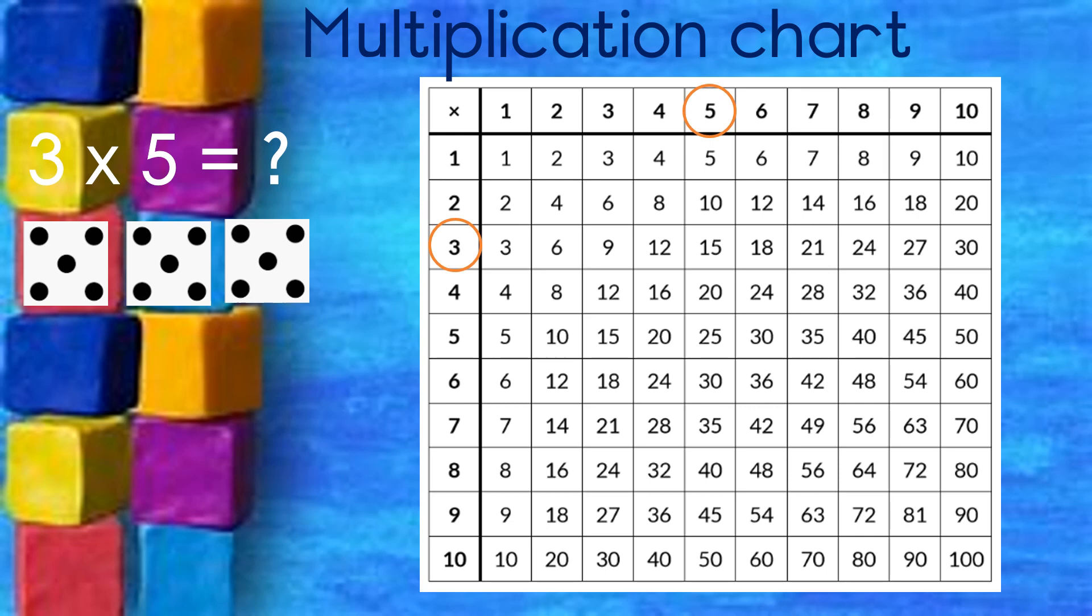Find the 3 and the 5 on the rows and the columns in your multiplication chart. Go down the column and across the row, and where the two meet, that will give you your answer.